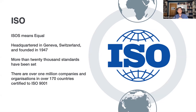In terms of popularity, there are over one million companies and organizations in over 170 countries certified to ISO 9001. By comparison, there are more than 300,000 certifications to ISO 14001, the environmental standard, also in over 170 countries. Note that these figures are just those who've been certified — there may be many more companies operating to these standards but not yet certified.